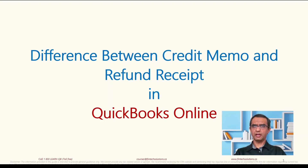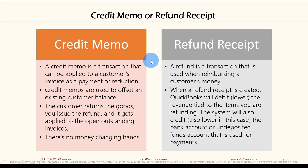Hi everyone, welcome to Fintech Academy. This is Harsh. Today I will go over the difference between credit memo and refund receipt in QuickBooks Online — how they both work and which one to use when. A credit memo is a transaction that can be applied to a customer's invoice as a payment or reduction, whereas a refund receipt is a transaction used when reimbursing a customer's money.